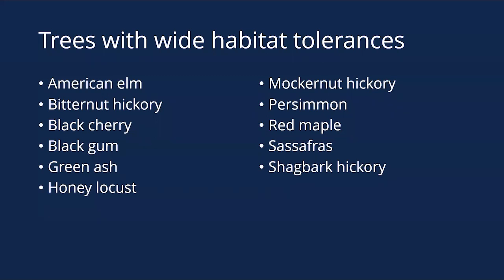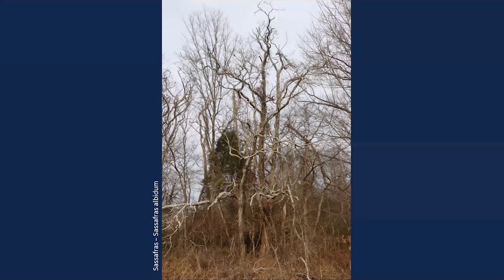Some trees have very wide habitat tolerances and you can't nail them down just on habitat — American elms, bitternut hickories, black gums, green ash, and so forth are too much of a generalist. There are also fence row trees like sassafras and persimmon that you'll commonly see growing up in old fence rows, and old field colonizers like American elm, box elder, and green ash — wind-dispersed seeds that move into abandoned fields first.